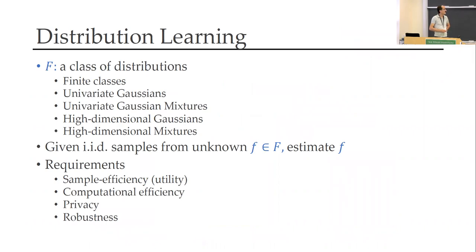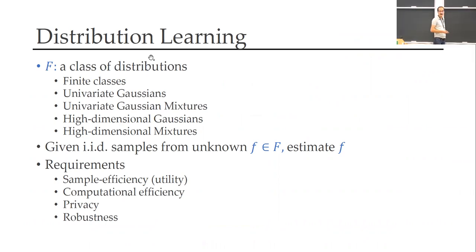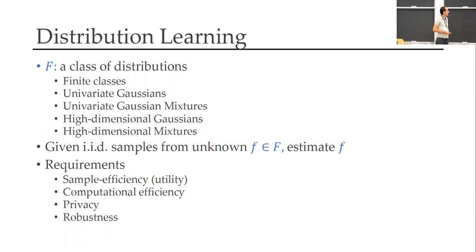We want to consider some basic learning tasks where you want to learn with respect to a class of distributions, such as finite classes, Gaussians, their mixtures, and so on. You are given an IID sample from a distribution from the class, you don't know it, and you want to estimate it. We are interested in satisfying requirements like good accuracy or utility, privacy, robustness, and computational efficiency.